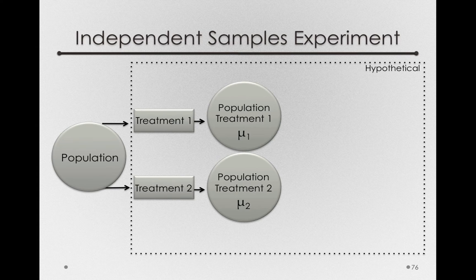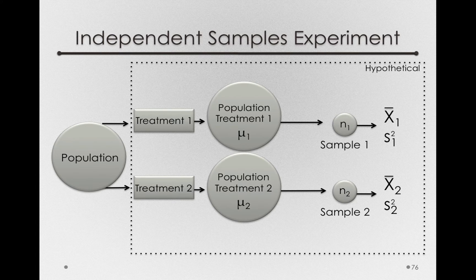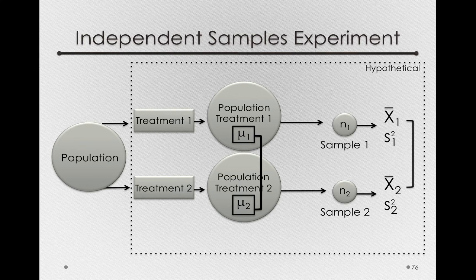We have mu sub 1 for the population after the placebo, and mu sub 2 for the population after the treatment. To understand the characteristics of these populations, we imagine taking samples — this is where we get our n sub 1 and n sub 2 — which would yield the same sample statistics. This is hypothetical but an analogous situation statistically: we'll still be comparing x-bar sub 1 versus x-bar sub 2, and those give us an estimate of mu sub 1 versus mu sub 2. It's the difference of those population means that our sample statistics are actually capturing.